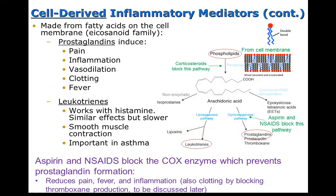On the other side of the pathway we have the cyclooxygenase pathway, which forms prostaglandins, and this is where aspirin and NSAIDs work. Prostaglandins cause pain, inflammation, vasodilation, and fever. That's why when you take an NSAID like Advil or take aspirin, you can reduce some of the inflammation, pain, and fever associated with an infection.